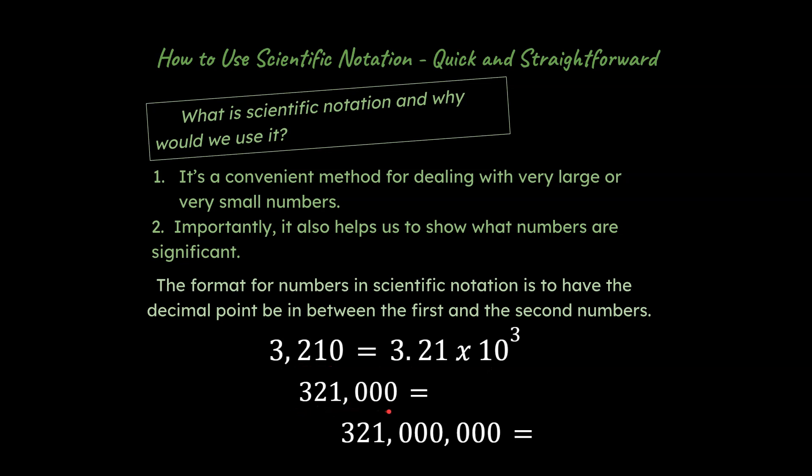Similarly, if we wanted to convert this into another format where we have the decimal points in between the first and the second numbers, what do you think we would write for this answer over here? Well, it would be 3.21 times 10 to the fifth. And then if there are units for that, we should add in our units as well. How about this one over here? What would this be? Well, that would be 3.21 times 10 to the eighth.